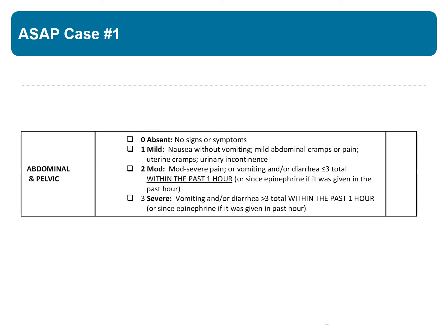In the abdominal and pelvic category, he did have vomiting once and it was within the past hour — he vomited at 9:20 and is presenting at 10 o'clock. He didn't vomit more than three times, which would be required to meet the severe category. So he falls in the moderate category and gets two points.